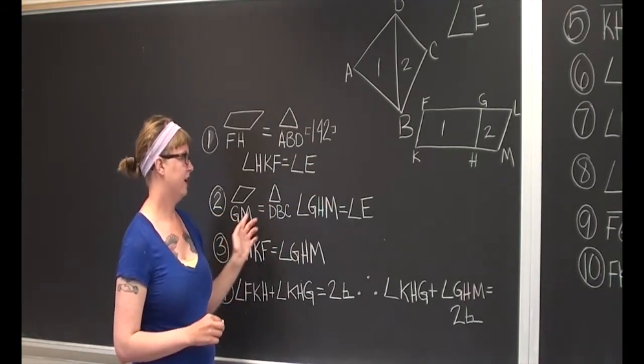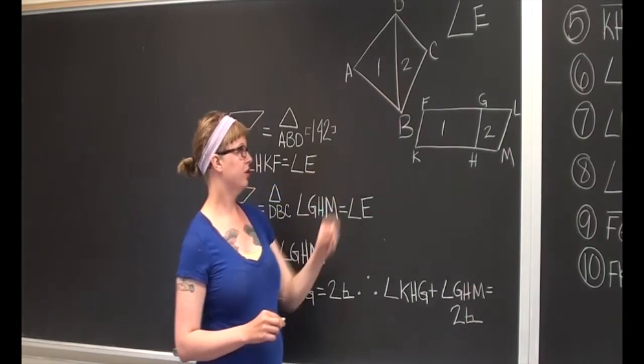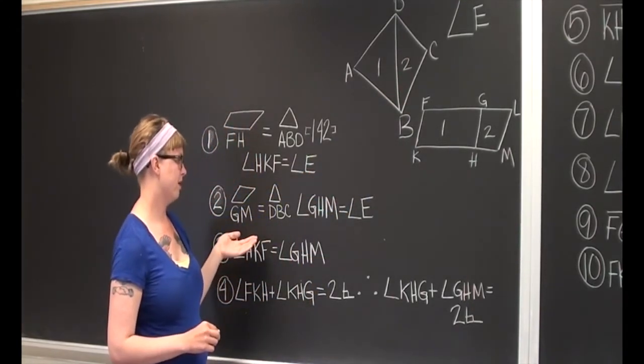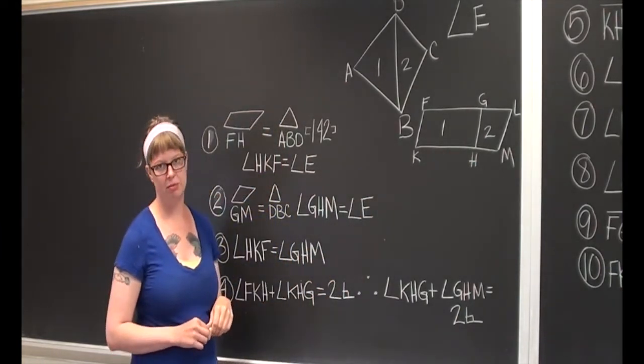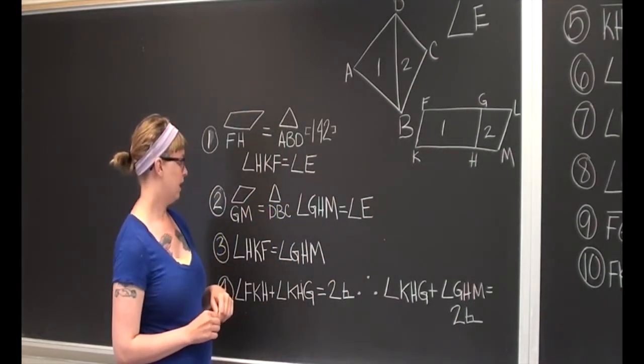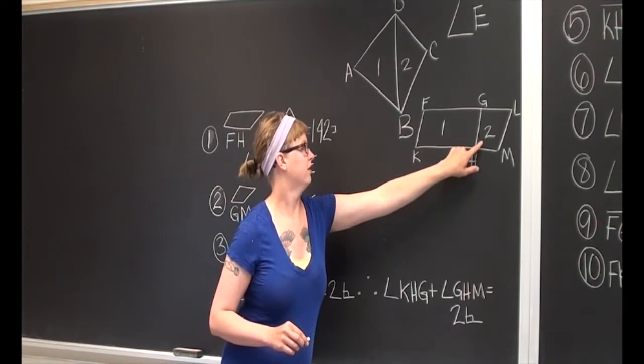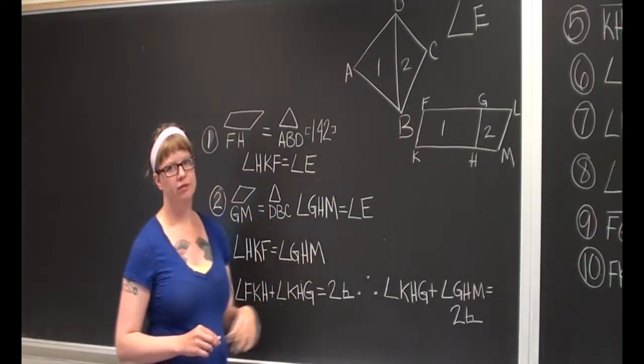And then next we're going to take triangle 2 and we're going to create a parallelogram equal to it, connected to the parallelogram that we made before. And again, keeping the bottom angle here equal to the given angle, angle E.